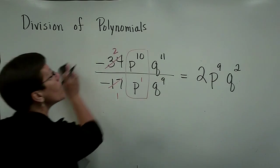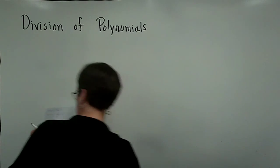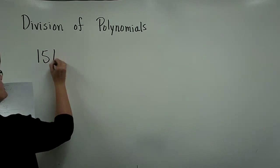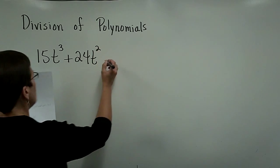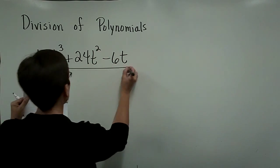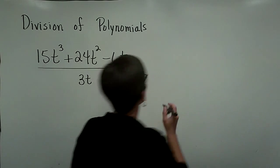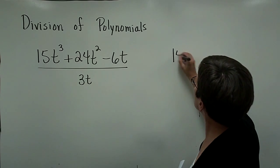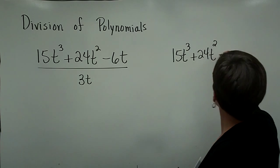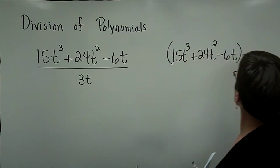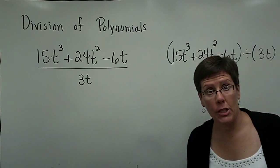Let's now divide a polynomial by a monomial. Here's an example of a problem, and I'm going to show you two ways that it might be written. 15 t cubed plus 24 t squared minus 6 t divided by 3 t. That's one way this problem might be written. Another way we might write this very same problem is 15 t cubed plus 24 t squared minus 6 t. That trinomial divided by a monomial of 3 t. Watch for it looking the same way.